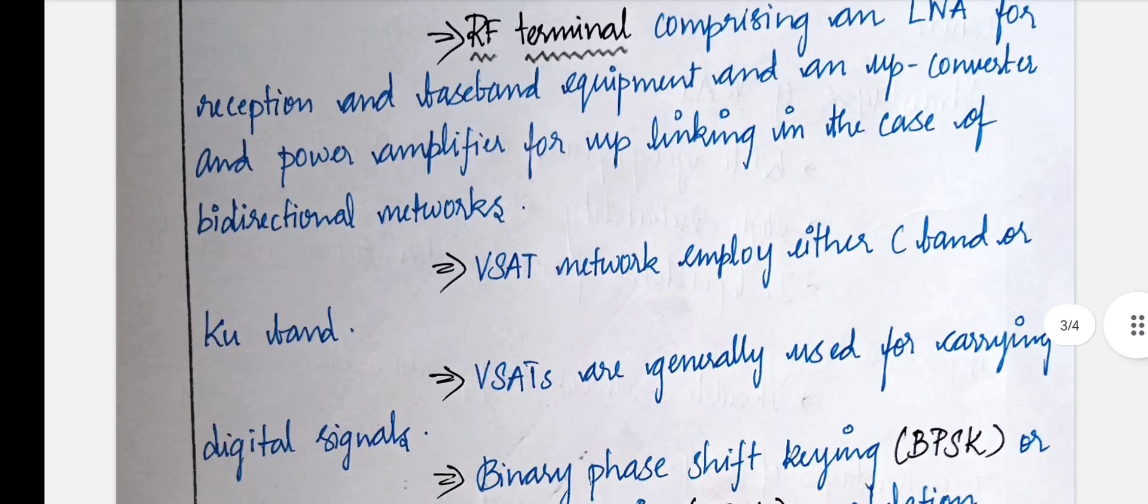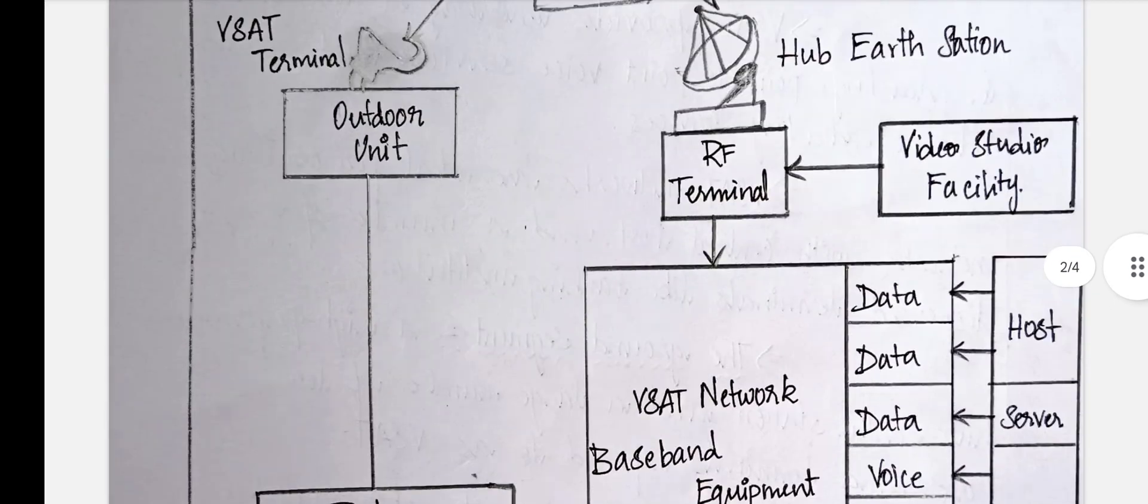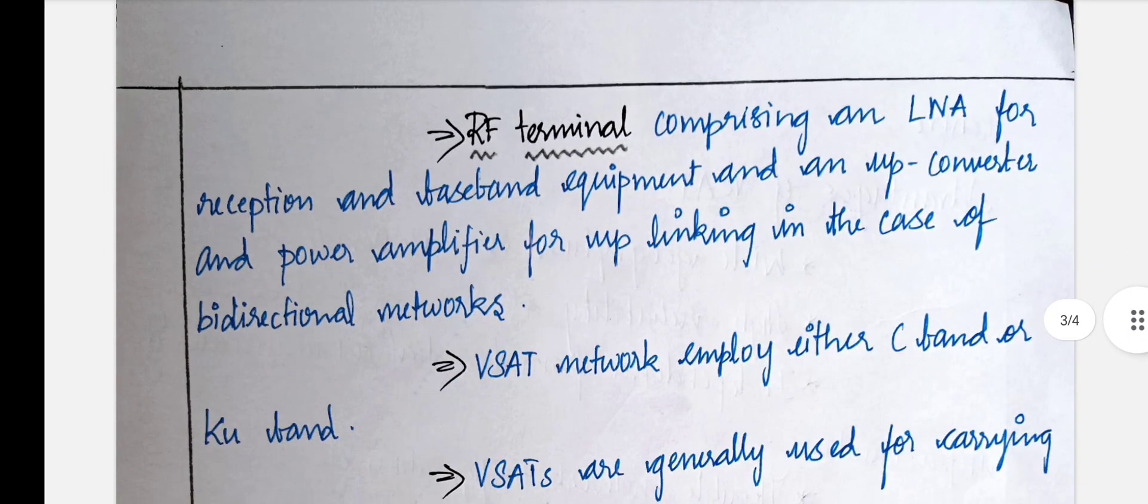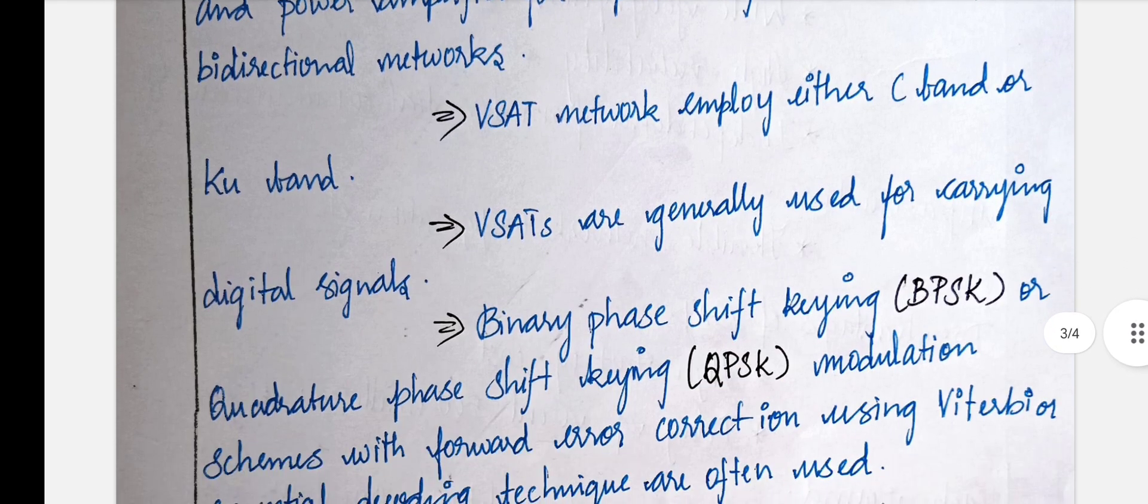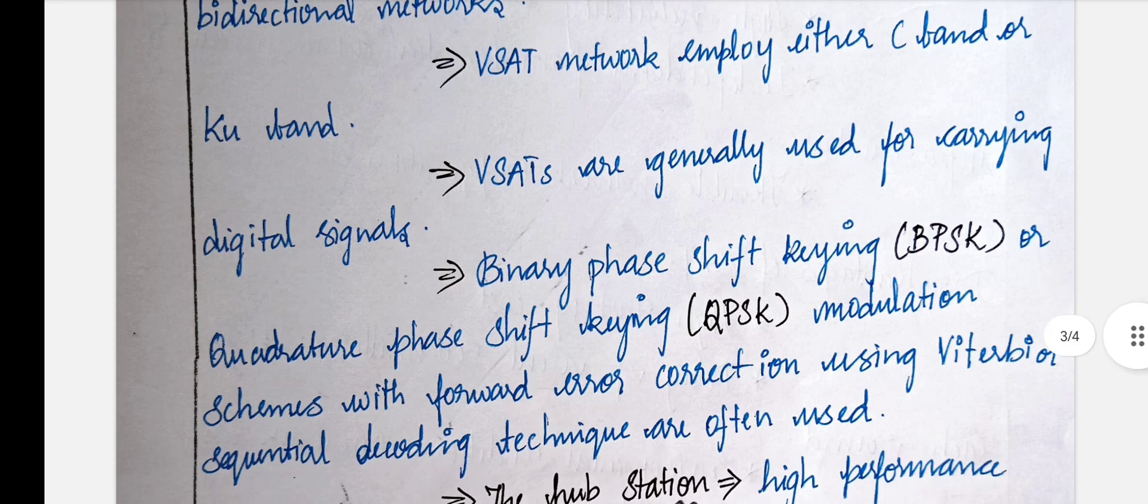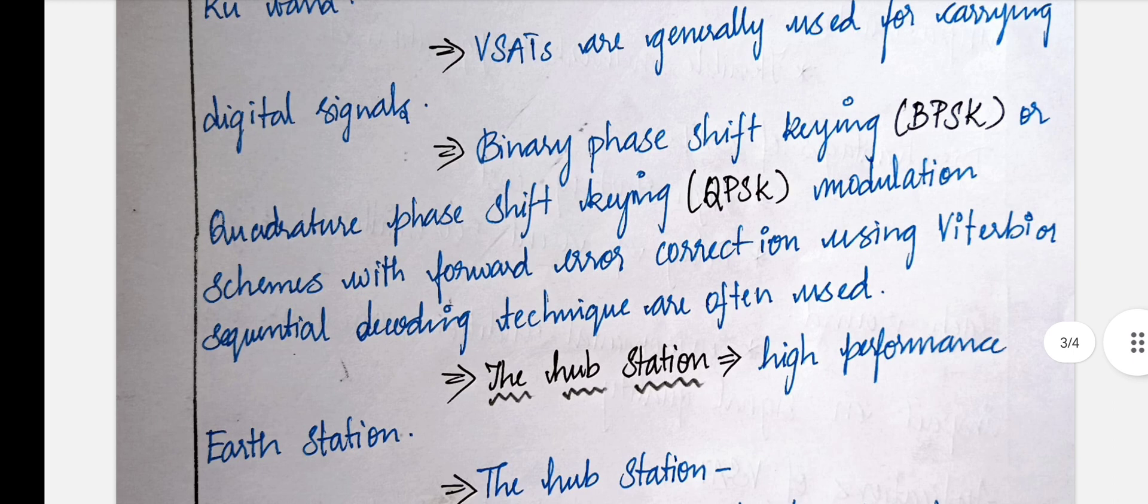VSAT is widely used, and the RF terminal comprises of an LNA, which is a low noise amplifier, which gives reception, and baseband equipment converts the signals into an upper converter, and a power amplifier is used for uplinking. The bidirectional network can receive and transmit and employs C band or KU band. Generally it carries digital signals and uses different types of modulations.